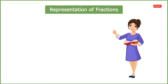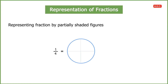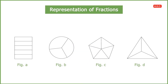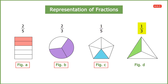We can represent fractions in many different ways. The first method is by partially shading figures. For example, to represent 1 by 4, we divide a given figure into four identical parts and shade one part. Here, 2 by 5 is shown by shading 2 out of 5 equal parts in figure A, 2 by 3 by shading 2 equal parts in figure B, 1 by 5 in figure C, and 1 by 3 in figure D.